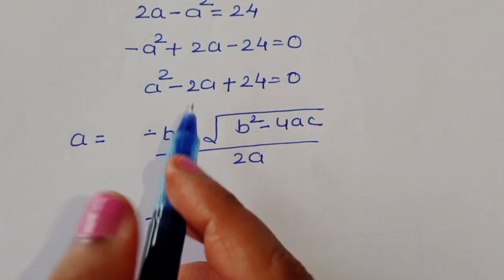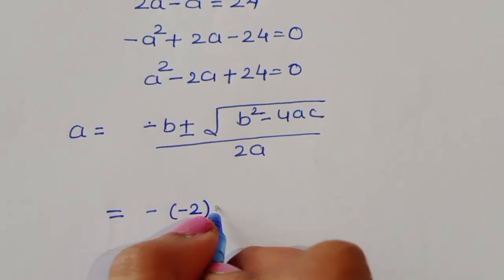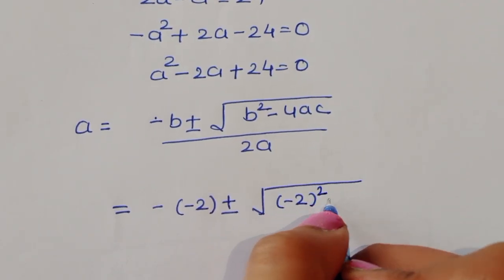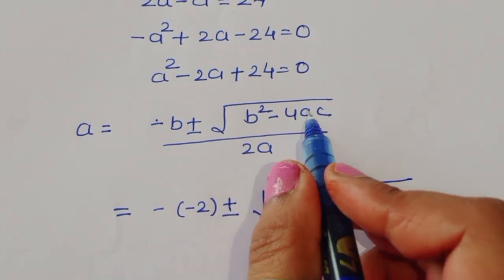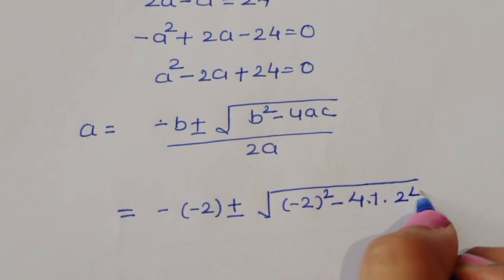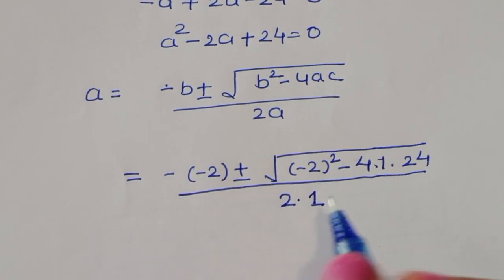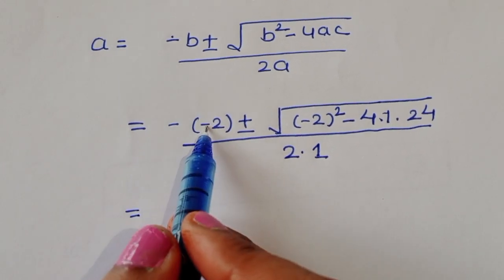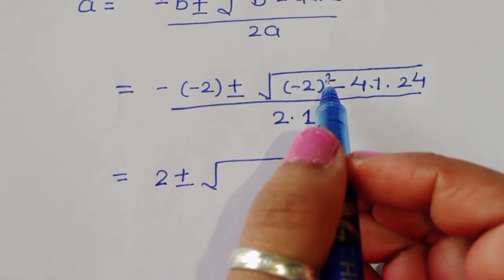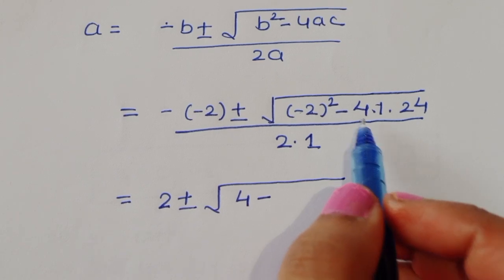Substituting values: a equals minus(minus 2) plus or minus square root of (minus 2) squared minus 4 times 1 times 24, divided by 2 times 1. This simplifies to 2 plus or minus square root of 4 minus 96, divided by 2.